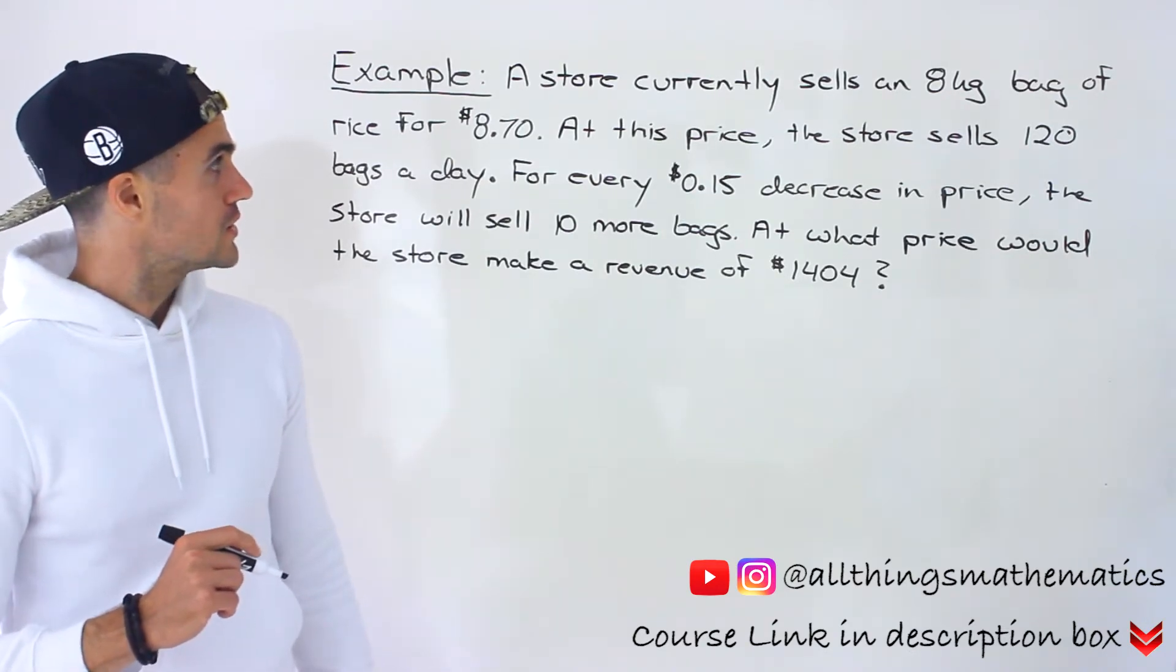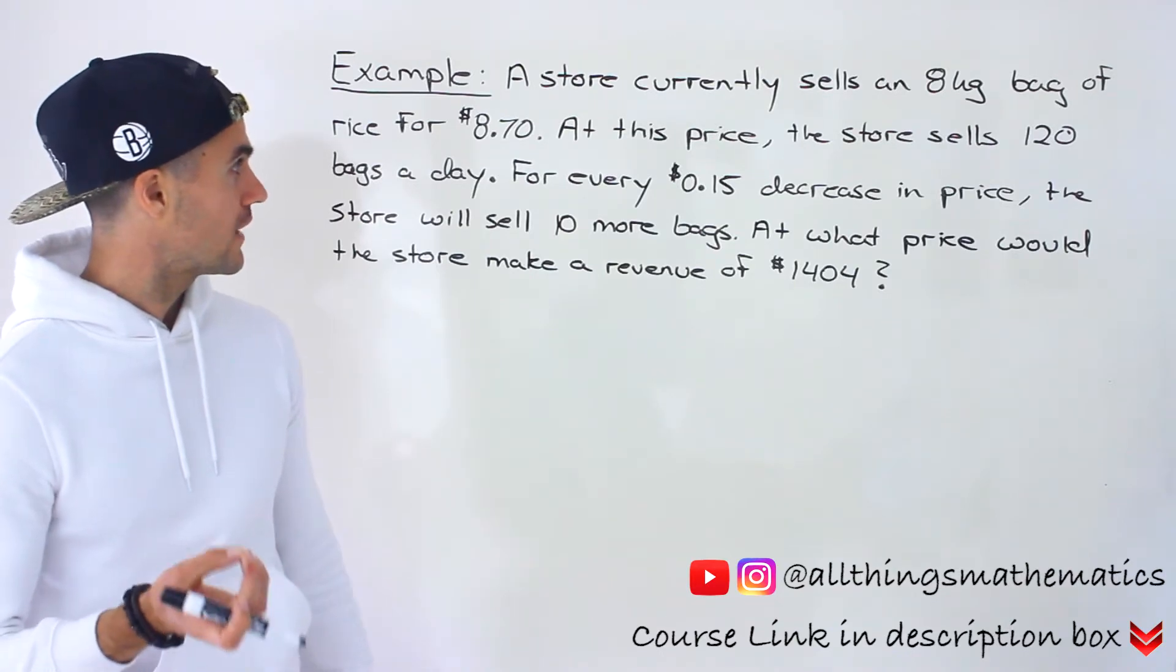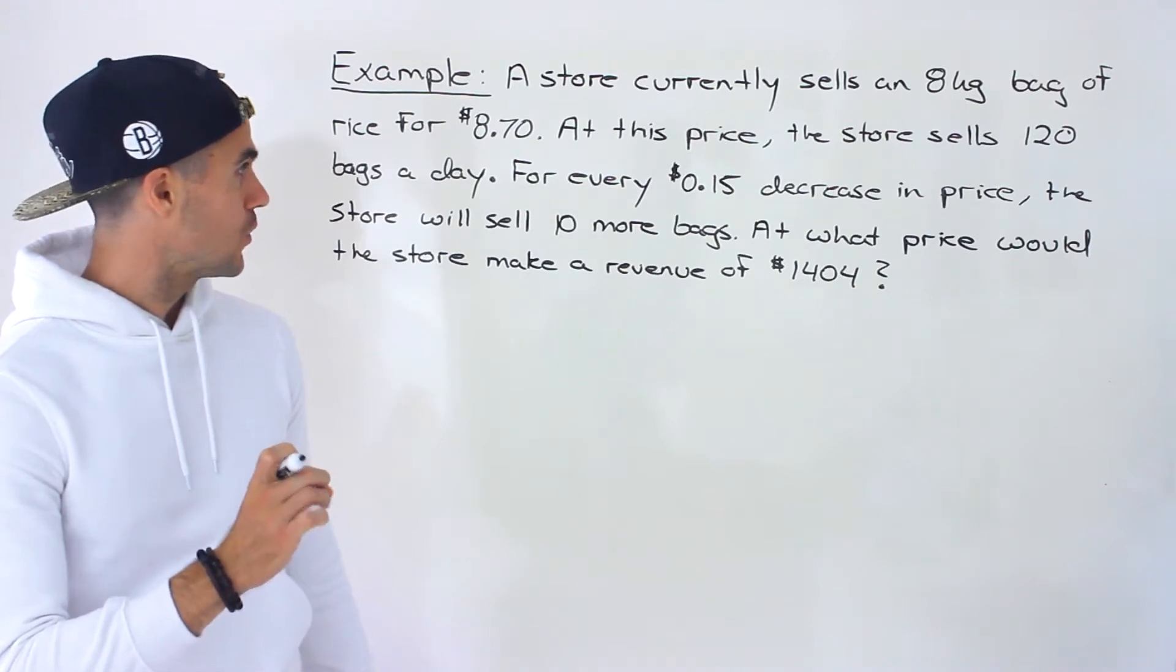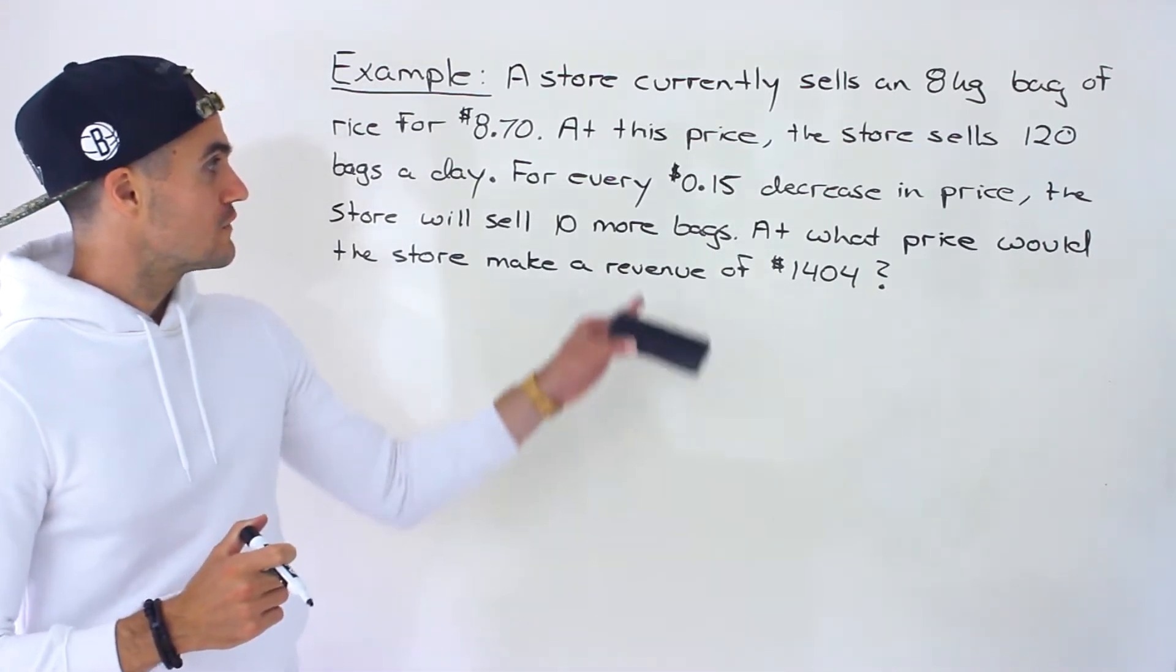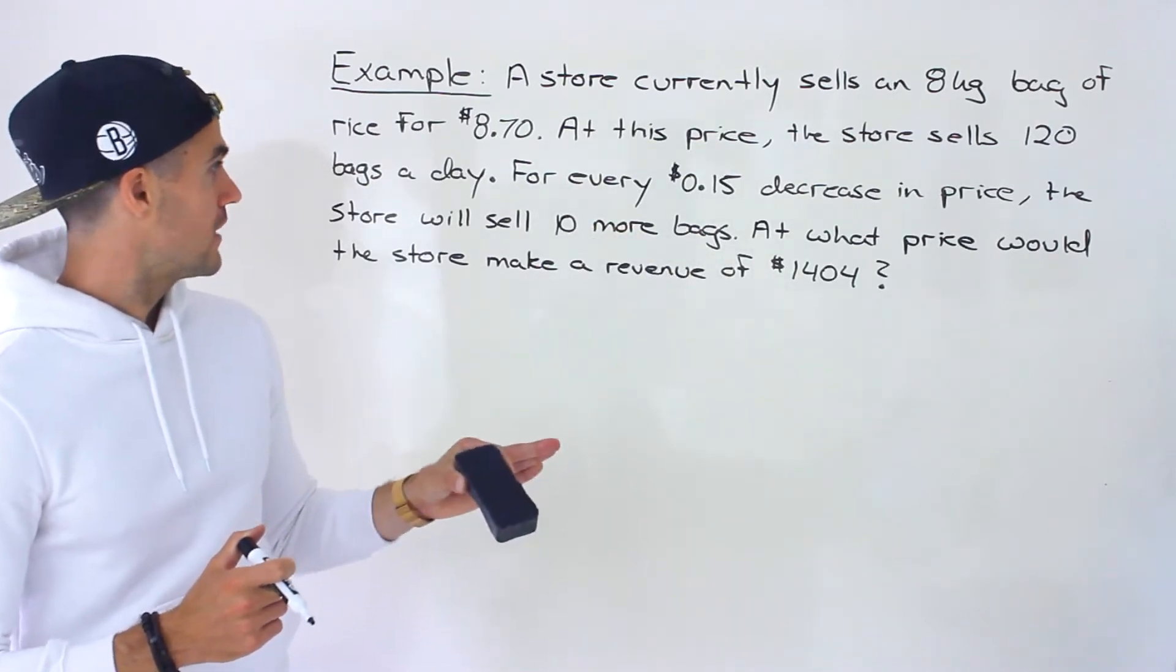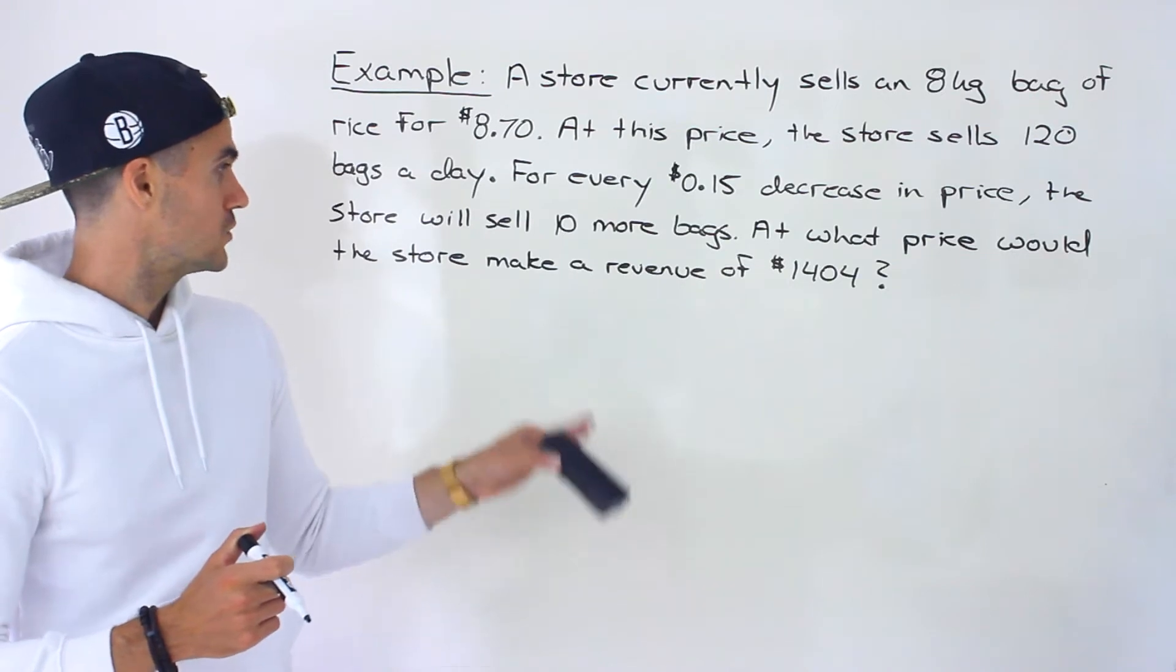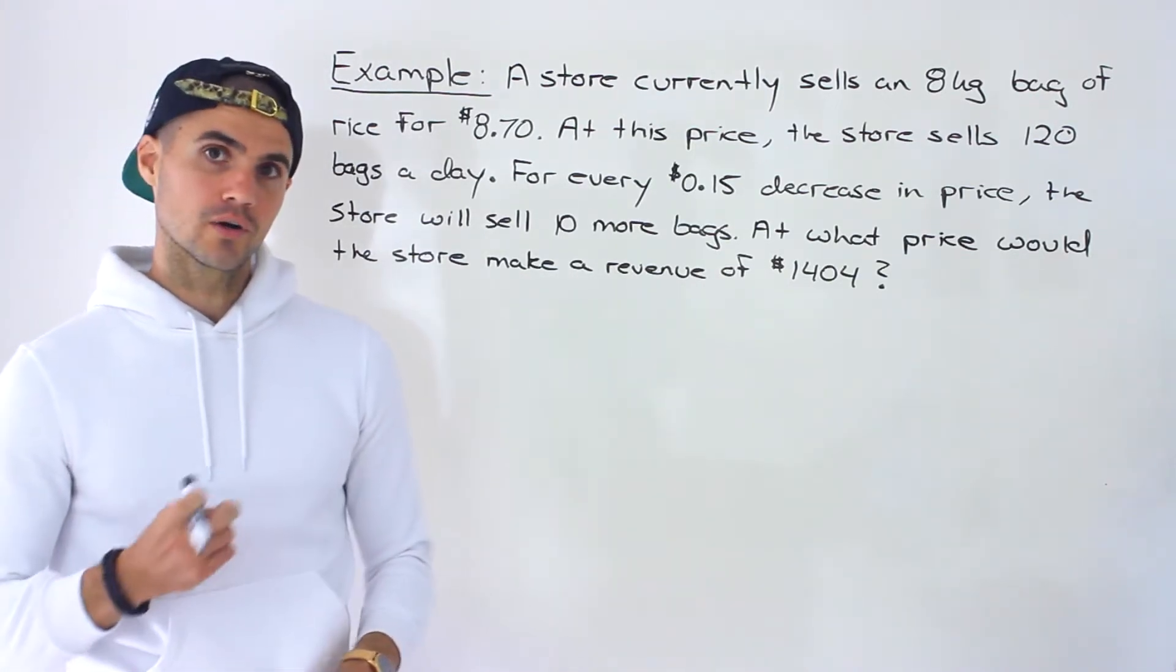We're told a store currently sells an 8 kilogram bag of rice for $8.70. At this price, the store sells 120 bags a day. For every 15 cent decrease in price, the store will sell 10 more bags. At what price would the store make a revenue of $1,404?